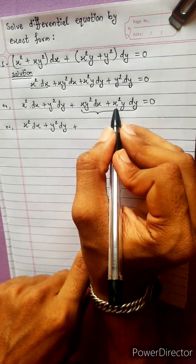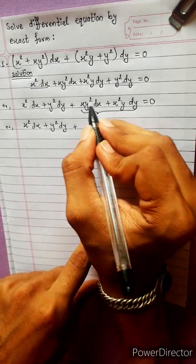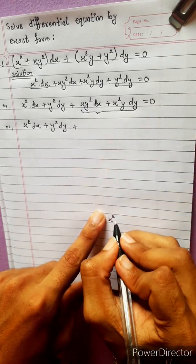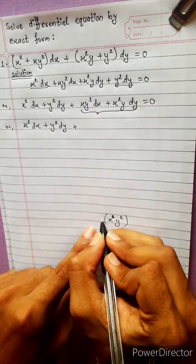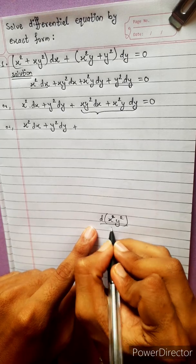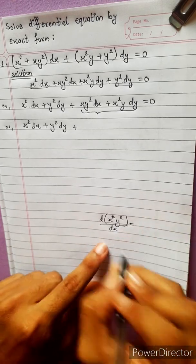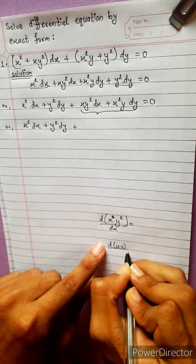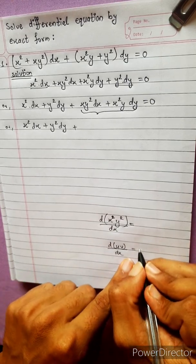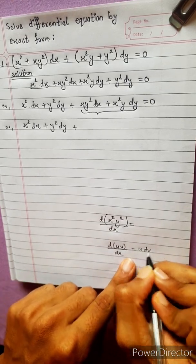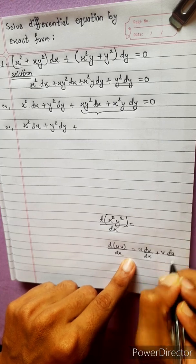We identify x squared y squared terms. This equals the UV formula: uv formula — u dv/dx plus v du/dx.